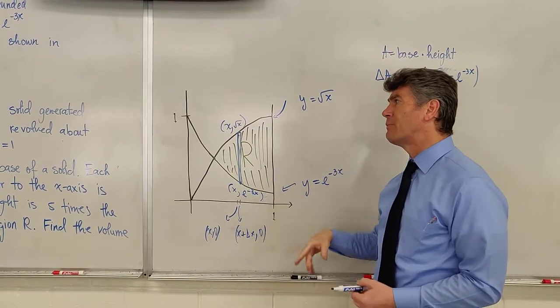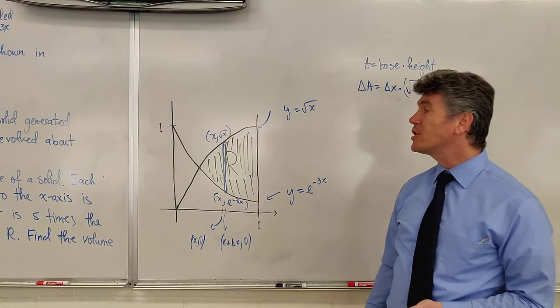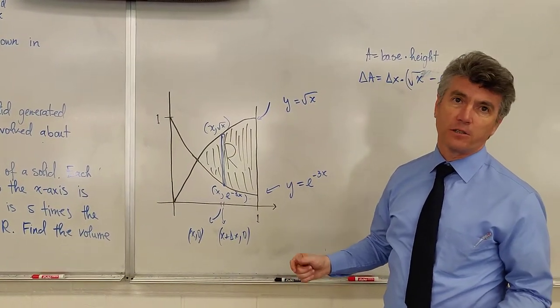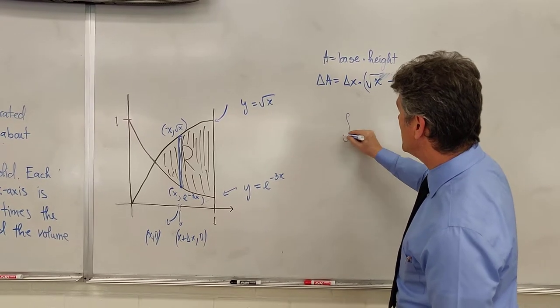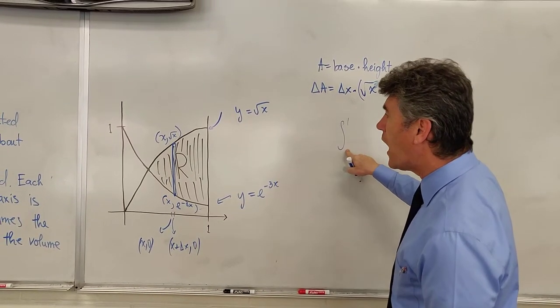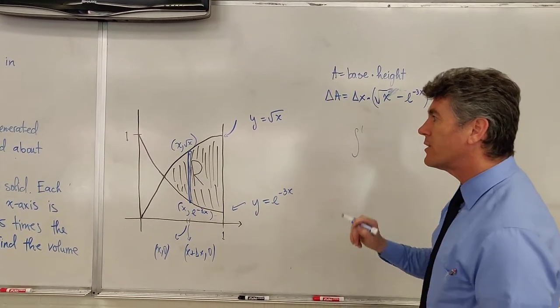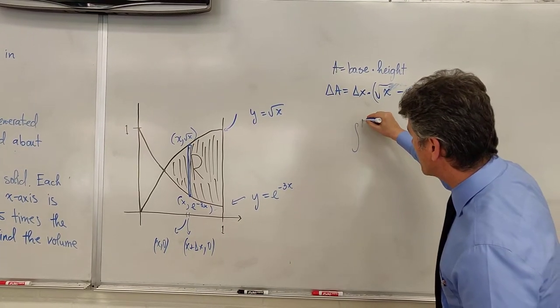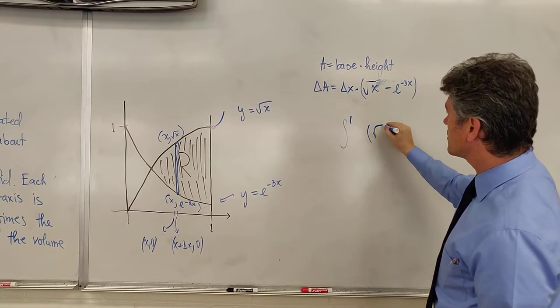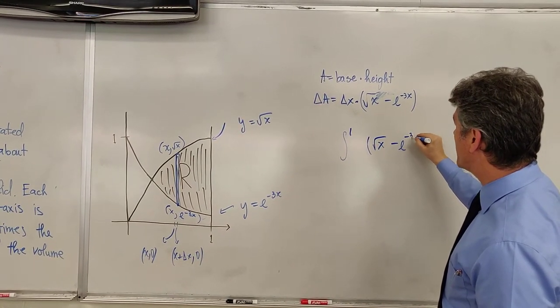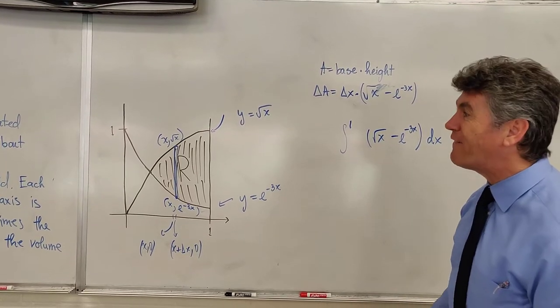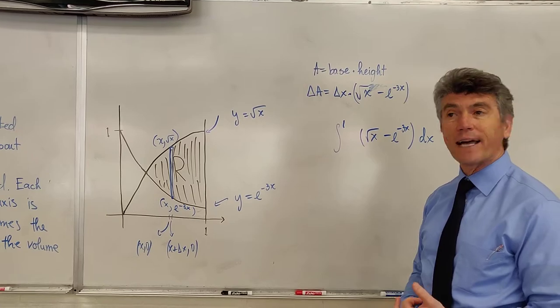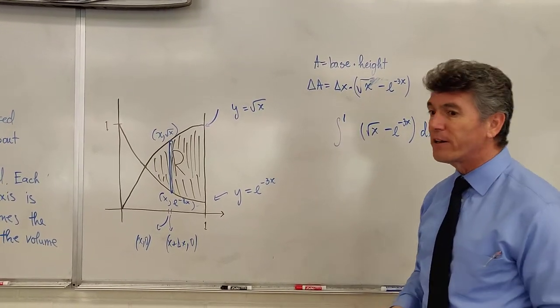So this is just the area of one representative rectangle. What do we do now? We imagine that there are an infinite number of those rectangles which become a Riemann sum, which become eventually a definite integral. So this is an integral from blank to 1. I know the upper limit of integration, but I don't know the lower limit of integration. We will find it shortly. So from blank to 1 of the square root of x minus e raised to the power of negative 3x dx. So how do we find the point of intersection? We use our graphing calculator. In this problem, I have to use my graphing calculator twice. Once to find the point of intersection, and a second time to evaluate the integral.